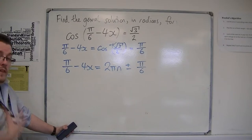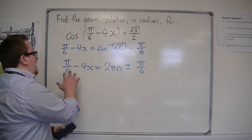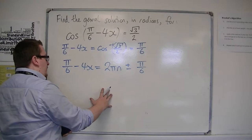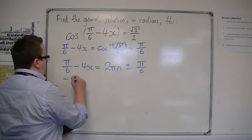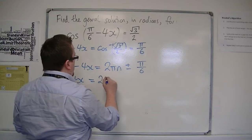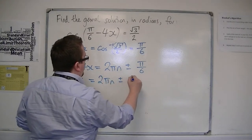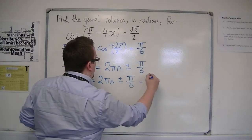So then you can take pi over 6 from both sides. So that would be minus 4x is equal to 2 pi n plus or minus pi over 6 minus pi over 6.